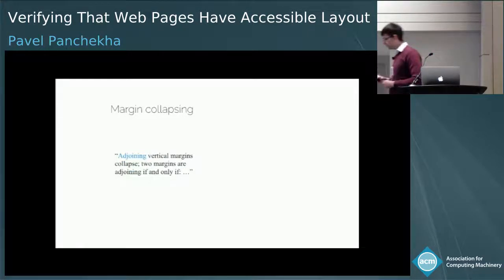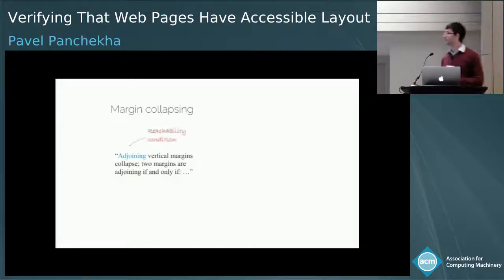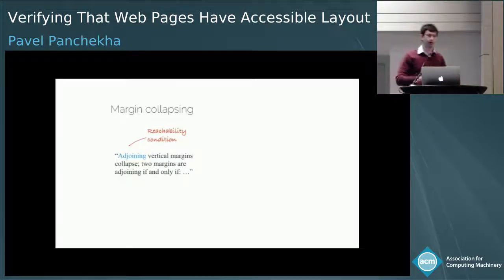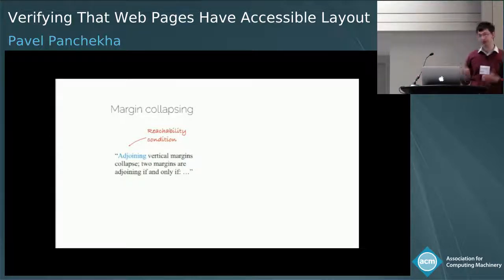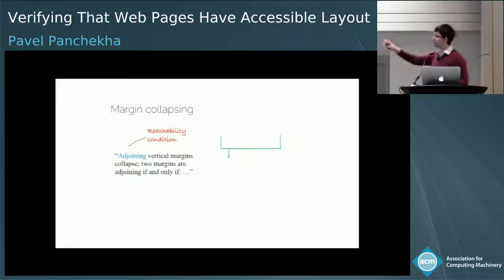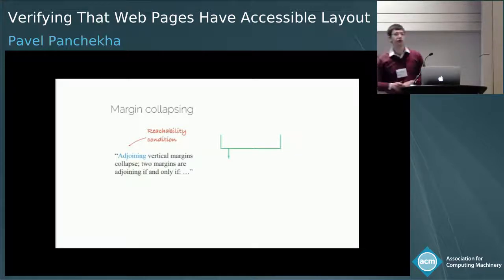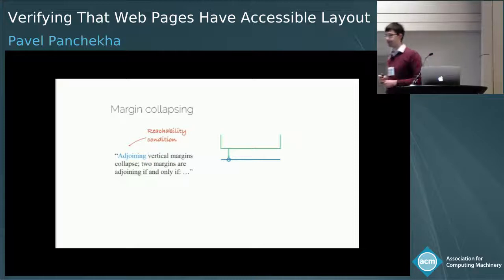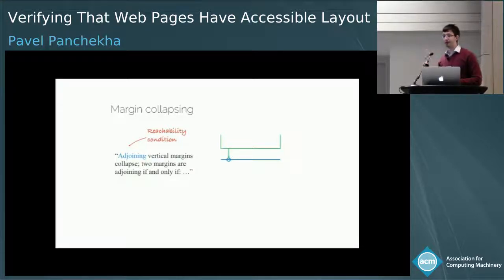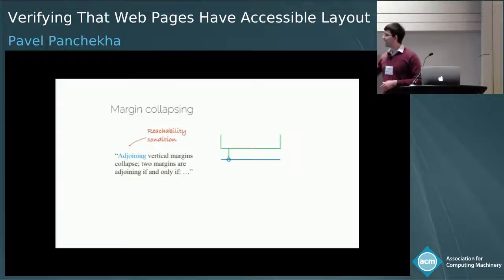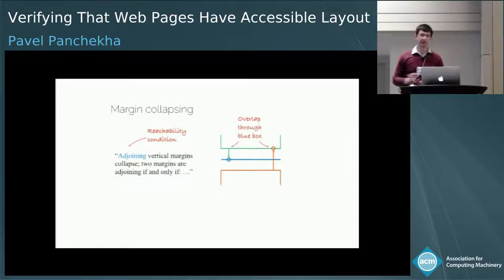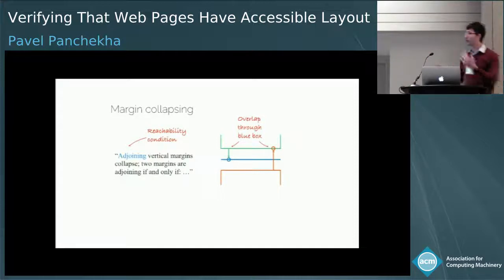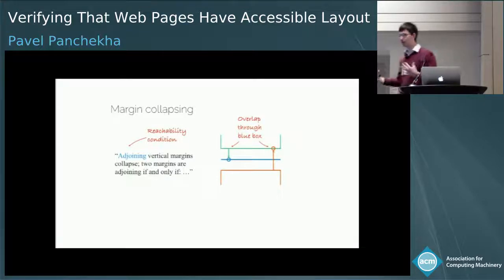Margin collapsing is defined in terms of 'adjoining vertical margins,' and what's important is that this is a transitive property — determining whether two vertical margins adjoin is a reachability condition, which is not something you can easily do in first-order logic. Here I've drawn a box in green with its bottom vertical margin as a green arrow. If a box is zero height, like this blue one, its top and bottom margins adjoin with each other, and so transitively any box that comes after the blue one will have its top margin adjoining with that green bottom margin. This actually happens to real webpages.